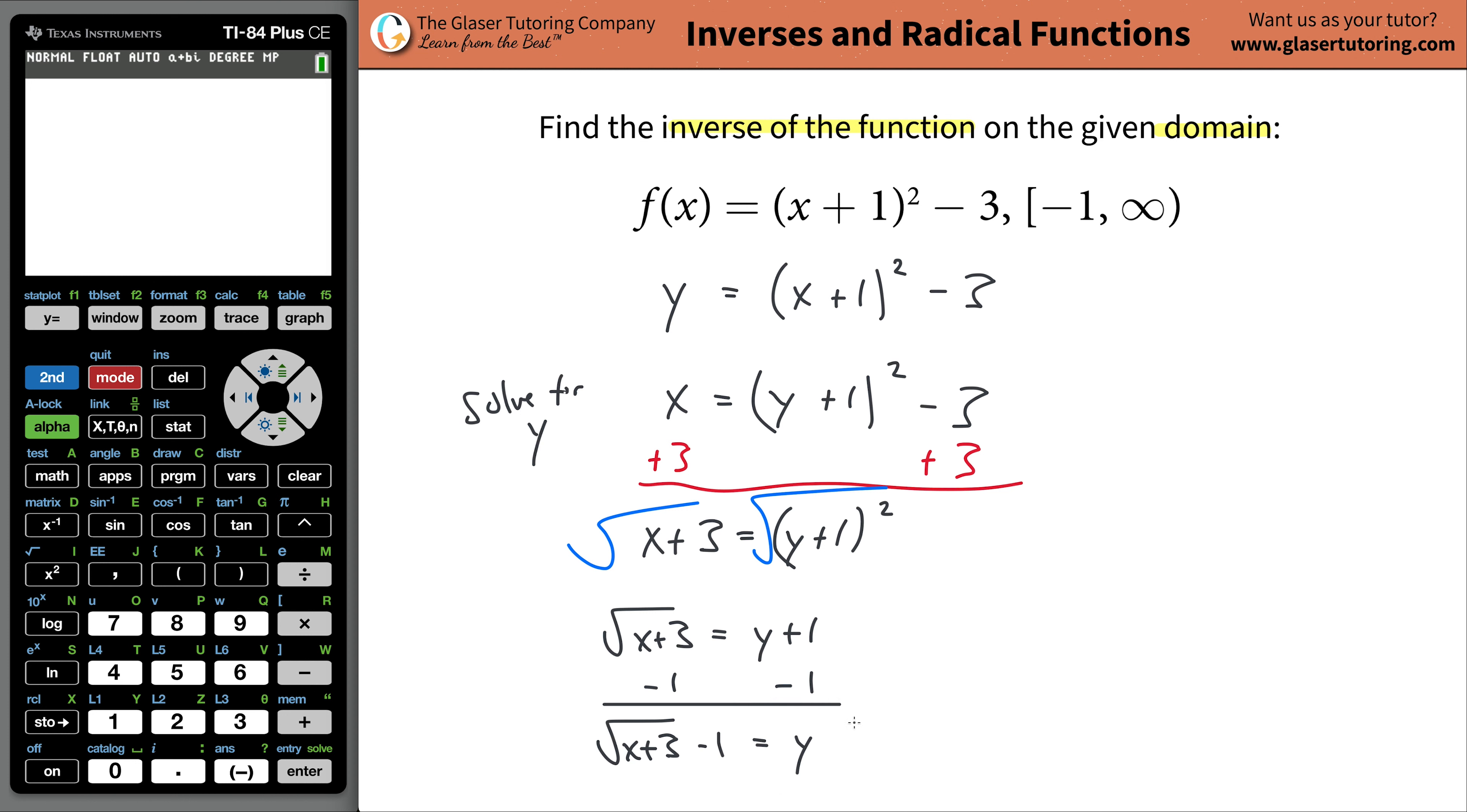So just to clean it up a little bit, instead of writing the y at the end, all you're going to do is you're going to replace it with an f of x, but you're just going to write a little minus one on the top, just to denote that it is the inverse, and then you're just going to copy basically everything else. So this is just x plus three minus one.